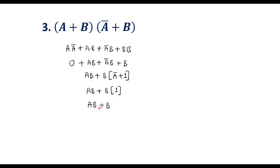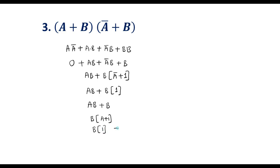Now I take b common: b(a + 1). Since a + 1 = 1, we get b·1 = b. So the simplified expression for the given function is b.